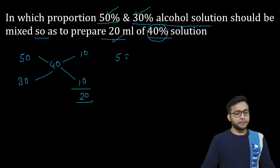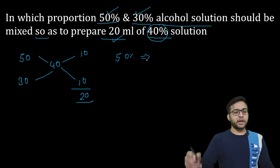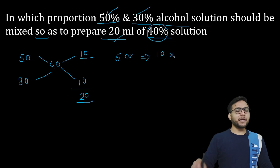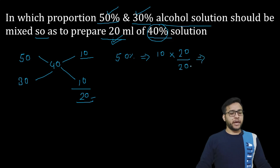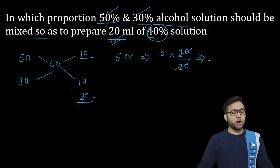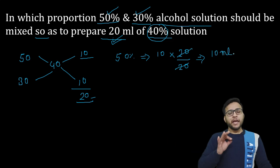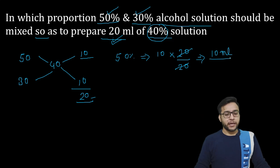यहाँ पर 50% लिख लेते हैं। 50% का कितना ml — तो यह 10 यहाँ पर आ जाएगा। यह value 10 यहाँ पर आएगा और हमें बनाना 20 ml है। यह upon total — तो यह 10 ml आएगा। मतलब 50% का हमें 10 ml चाहिए।